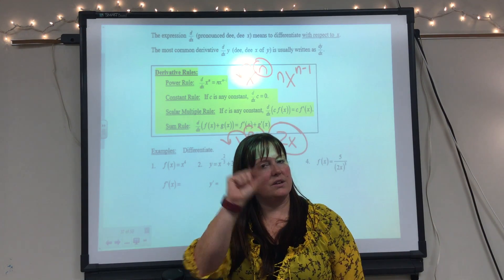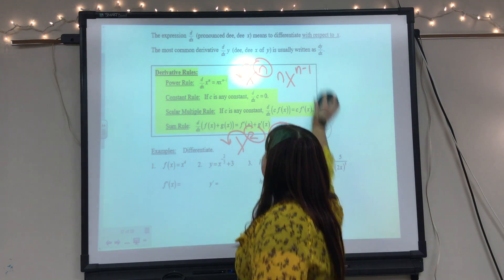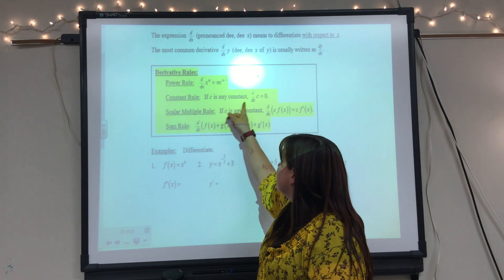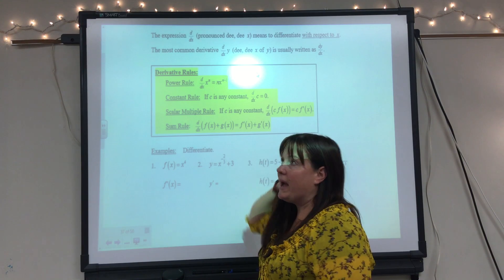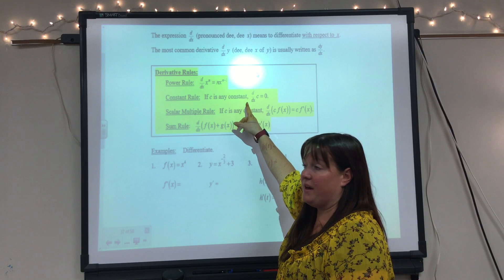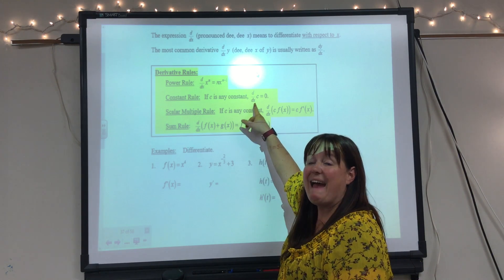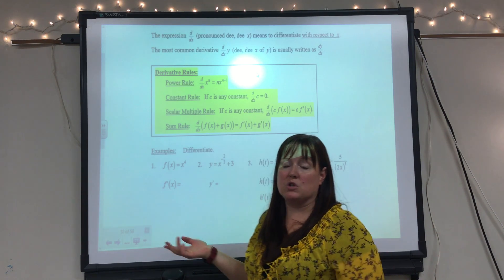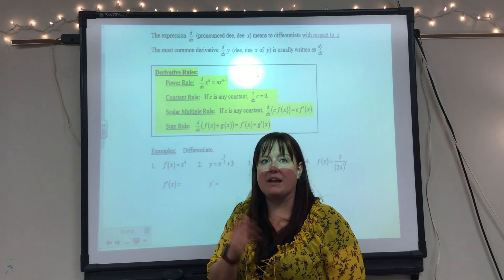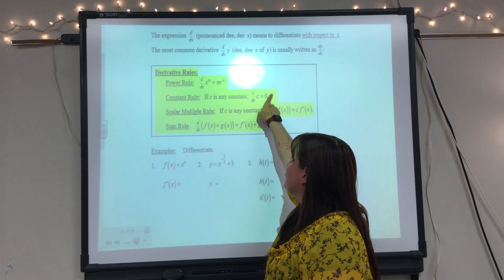The constant rule says that if c is a constant, the derivative of c is zero. I should also mention notation: d/dx means we're taking the derivative with respect to x of a function. The most common derivative we take is the derivative of y with respect to x, which is dy/dx.